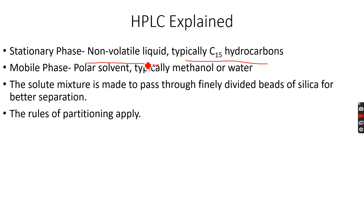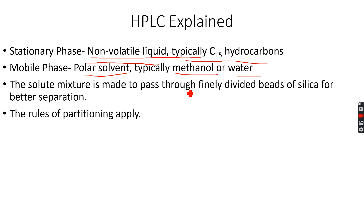The C15 hydrocarbons are non-volatile because the carbon chain is very long, so they are liquid and quite non-volatile. The mobile phase is the complete opposite — it is a polar solvent. So the stationary phase is non-polar and non-volatile, while the mobile phase is polar.